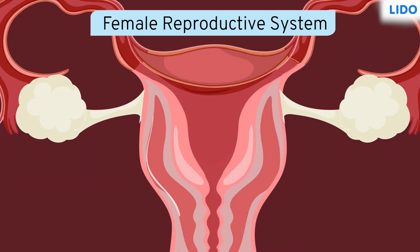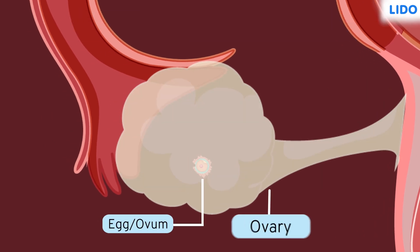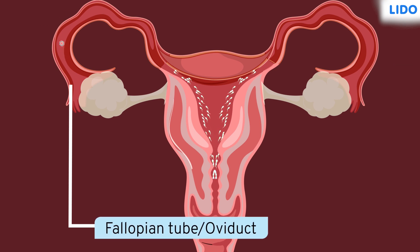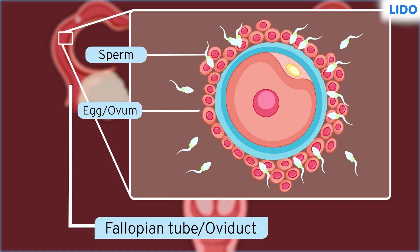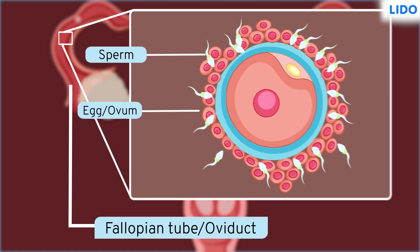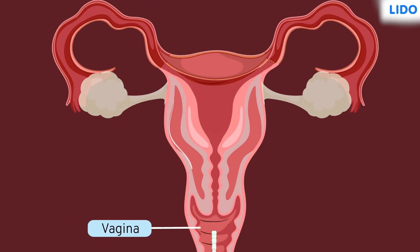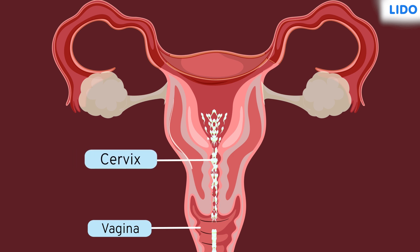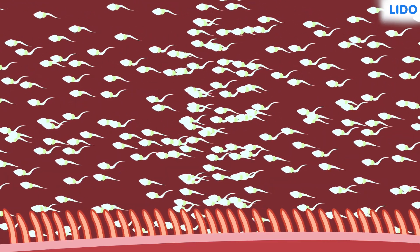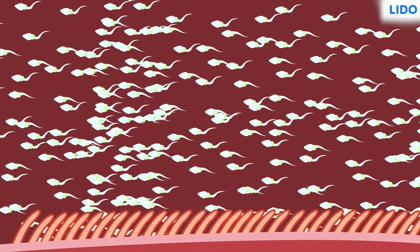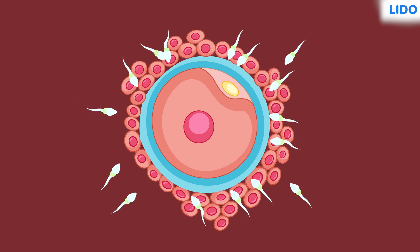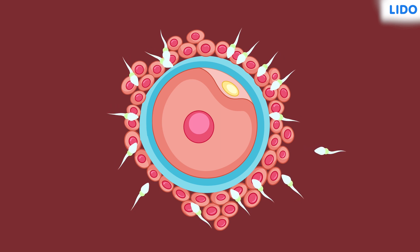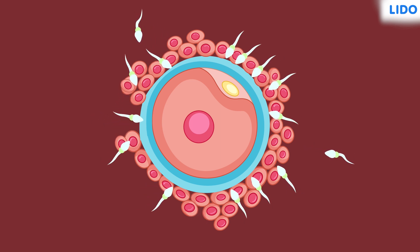In the female reproductive system, an egg or ovum is produced in the ovary and released into the fallopian tube or oviduct. Here, the ovum gets fused with the sperm which enters the vagina of the female reproductive tract during copulation. From the vagina, millions of sperm pass through the opening of the cervix and travel into the fallopian tubes. Out of approximately 100 million sperm, only a few can reach the upper part of the oviduct where only one sperm can fuse with the ovum. The rest of the sperm die and are absorbed on the way.